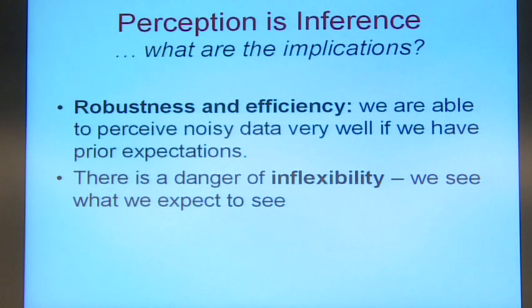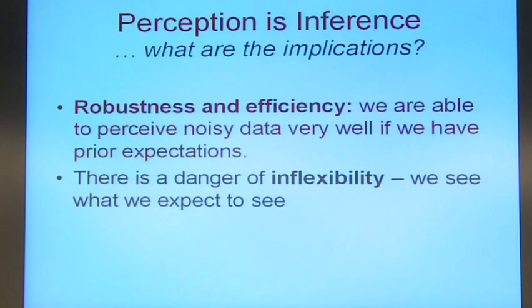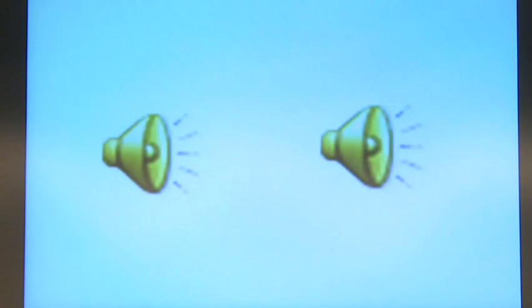But there's a danger, and that danger is we become inflexible. We become prejudiced about what should be there, and therefore we see that. So what is the example of the robustness and the efficiency? I'd just like to play you a sound here.